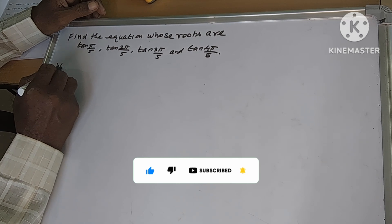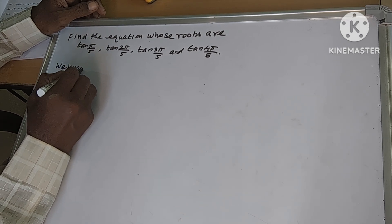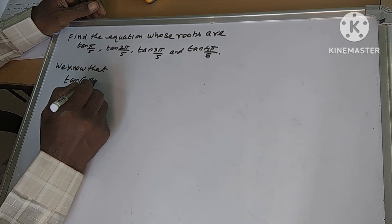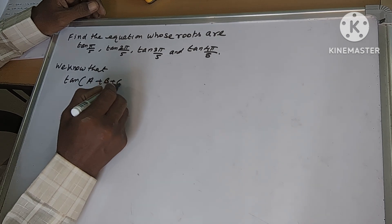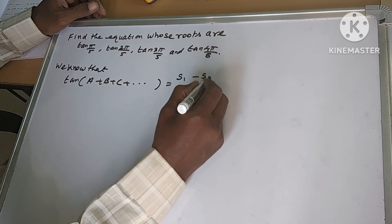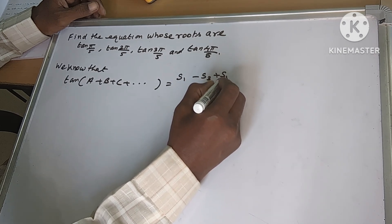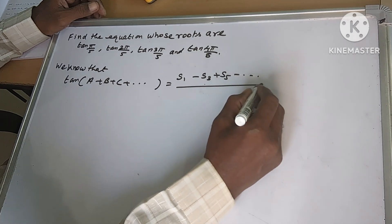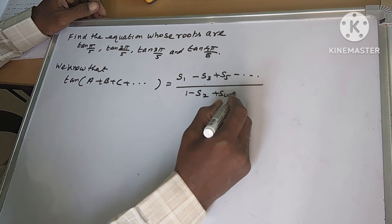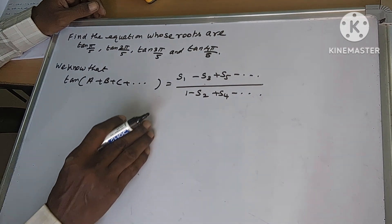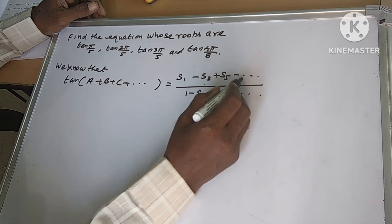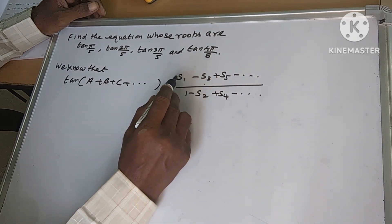We know that tan(A + B + C + ...) equals S1 minus S3 plus S5 and so on, divided by 1 minus S2 plus S4 and so on. In the numerator, the suffix goes 1, 3, 5, 7 — signs are alternating. In the denominator, it starts with 1 then even suffix 2, 4, 6, 8 and so on.